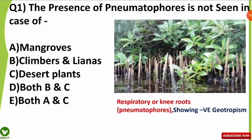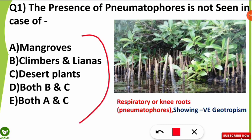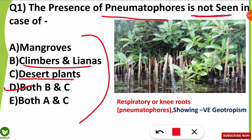The correct option will be option D. In climbers, lianas, and desert plants the pneumatophores are not seen, but in the case of mangroves the pneumatophores are seen. So what are these pneumatophores? They are very specialized adaptive structures which are called respiratory roots or knee roots, which show negative geotropism.